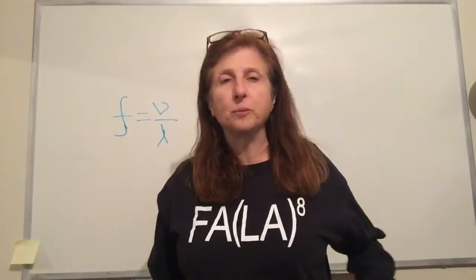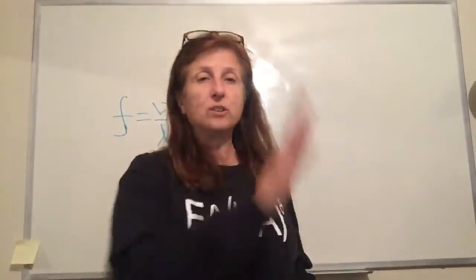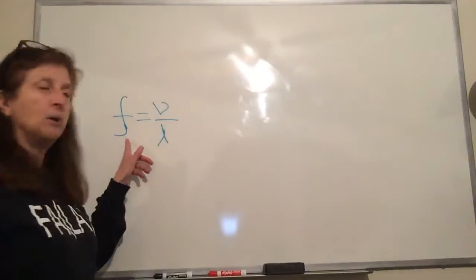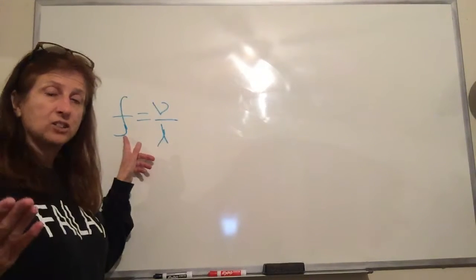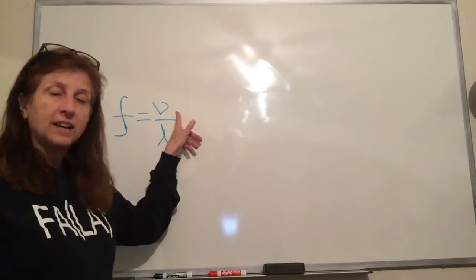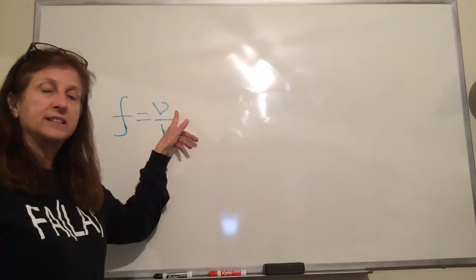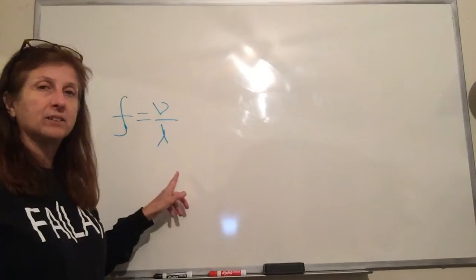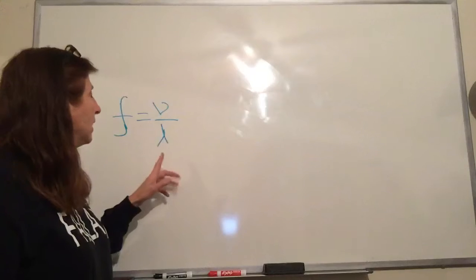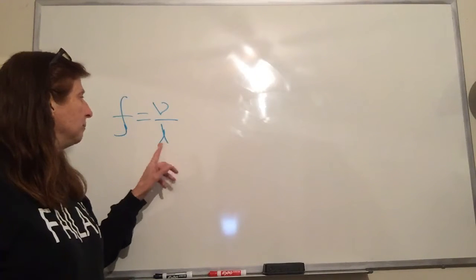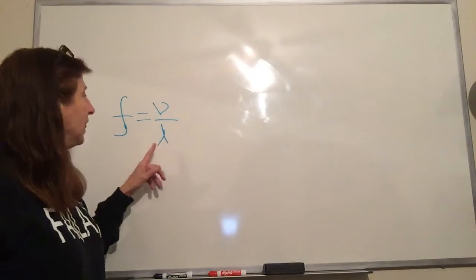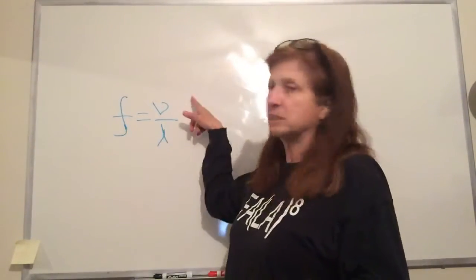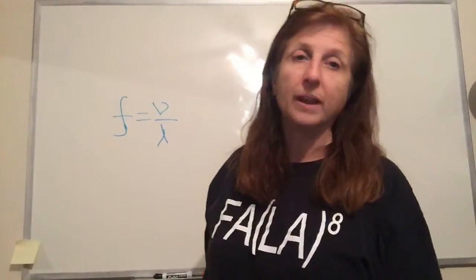Compression waves have the same properties as transverse waves. They have a frequency — how many compressions reach a certain place per second. They have a speed; the speed of sound varies depending on what medium it's going through, unlike the speed of light in a vacuum which is constant. And lambda — this symbol that looks like an upside-down wave — is the wavelength, which is the distance between compressions. Our formula is: frequency equals speed over wavelength.